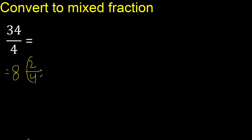Can be simplified because it can be divided by the same number. Divided by 2: 2 divided by 2 is 1, 4 divided by 2 is 2.